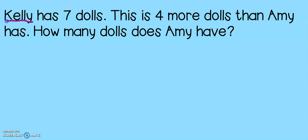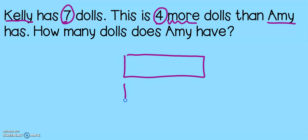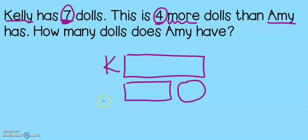Kelly has seven dolls. This is four more dolls than Amy has. How many dolls does Amy have? Let's draw our comparison bars right away and see who has more. Kelly has seven dolls — this is four more dolls than Amy — that means Kelly has more than Amy. So let's give Kelly the big bar and Amy the small bar.